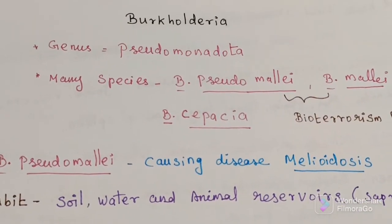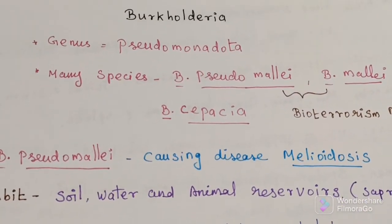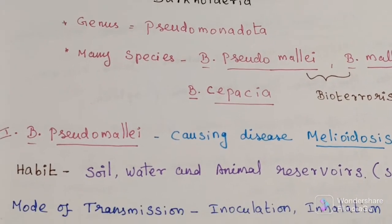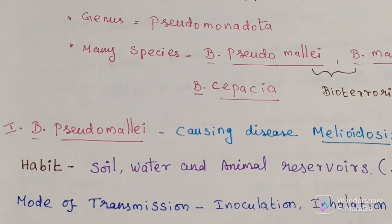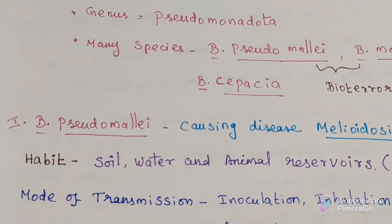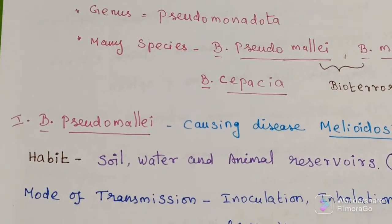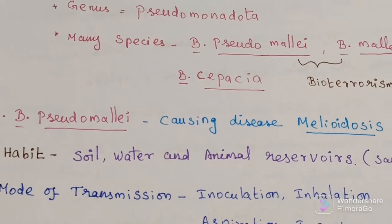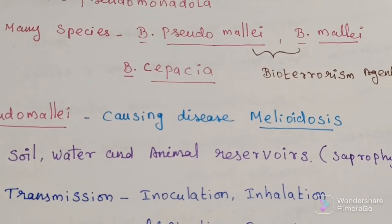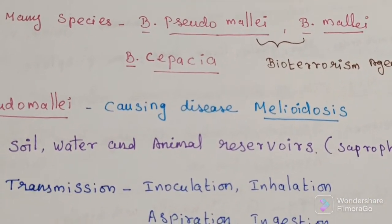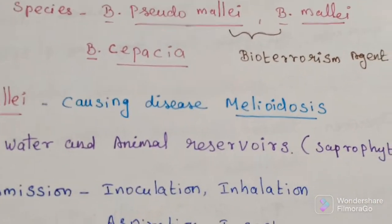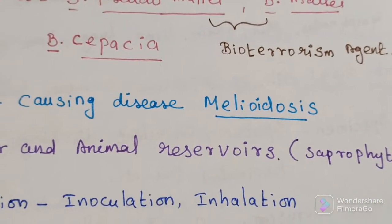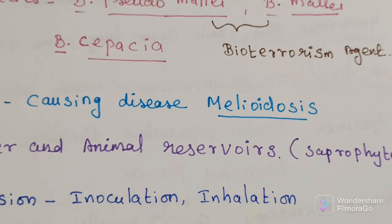We will discuss all three species one by one. The first one is Burkholderia pseudomallei. The disease it causes is called Melioidosis.